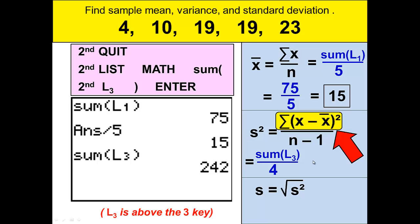We again need to hit 2nd quit to get out of any menu we may still be in. Then 2nd list to get to the list menu. Over to math and then choose sum. 2nd L3 to tell it to sum list 3. Close the parentheses and then press enter. Remember L3 will be above the 3 key. That will give us 242 which needs to be divided by 4.